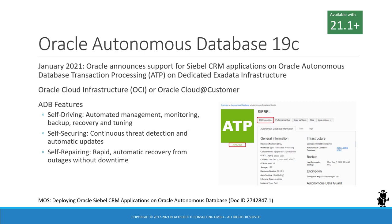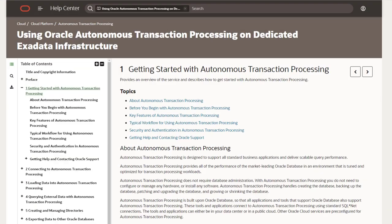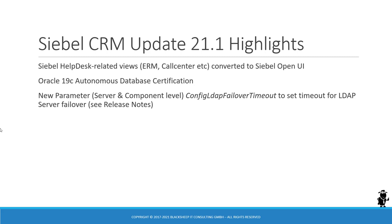The white paper describes not just the Autonomous Database and ATP, but also how to set up Siebel on an ATP instance on dedicated Exadata Infrastructure on Oracle Cloud Infrastructure. If you want to get started with Oracle ATP on dedicated Exadata Infrastructure, you can find a guide in the Oracle Help Center and also on Oracle Support to get that white paper. So that's a wrap on the Siebel CRM Update 21.1. Thank you very much for listening in, bye bye.